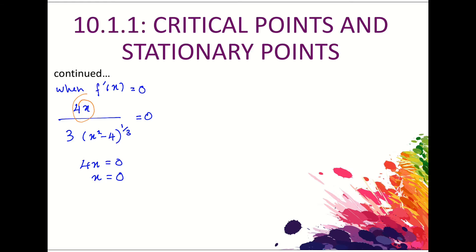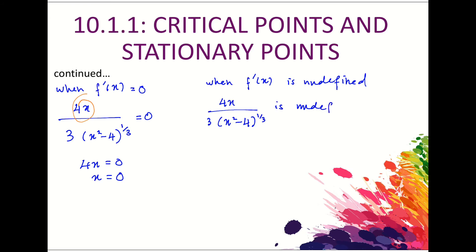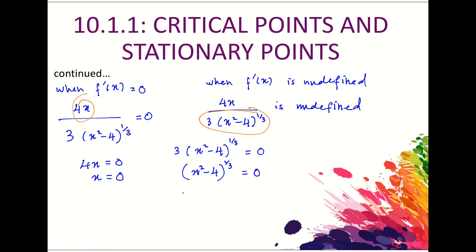In the second case, when f'(x) is undefined, 4x over [3 times (x² − 4)^(1/3)] is undefined because the denominator equals 0. Setting 3 times (x² − 4)^(1/3) = 0 gives (x² − 4)^(1/3) = 0, then x² − 4 = 0, so x² = 4, and x = ±2.